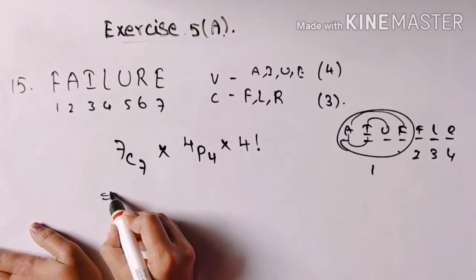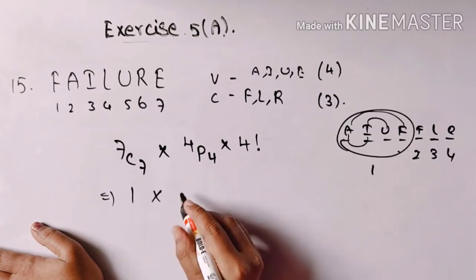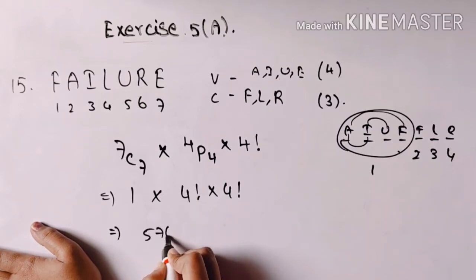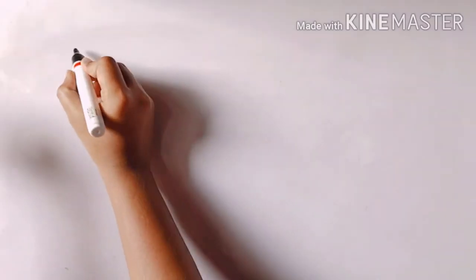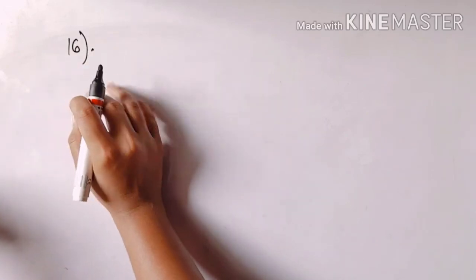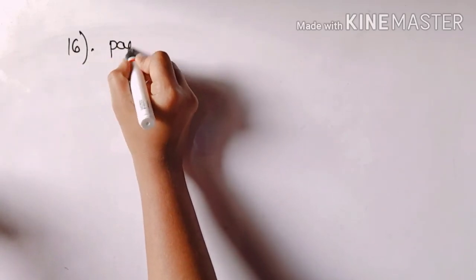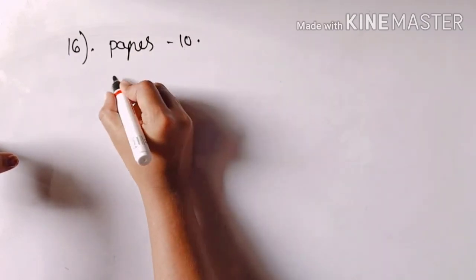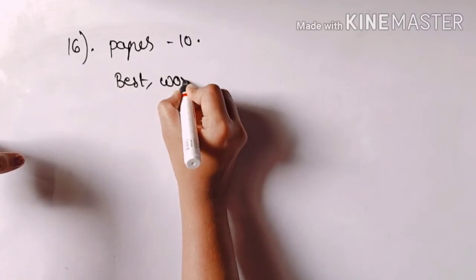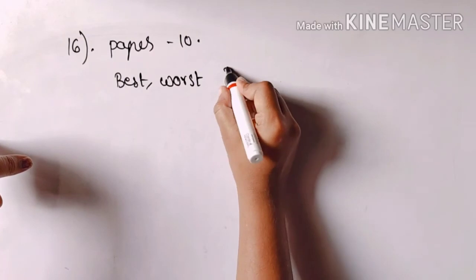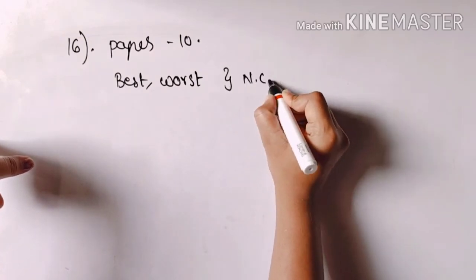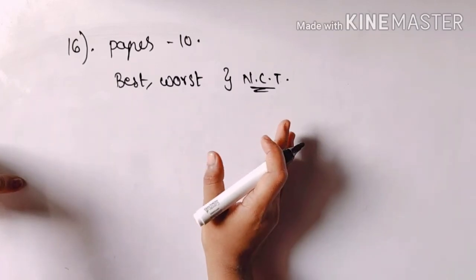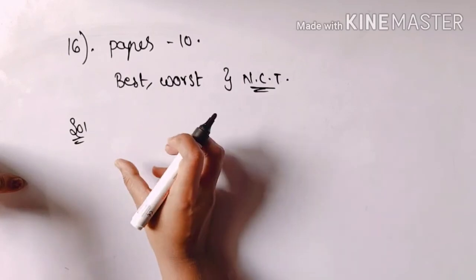So we get 7C7 and 4P4 for the arrangement. Never come together — there is another process needed for that condition, so we need to conduct a simple shortcut.